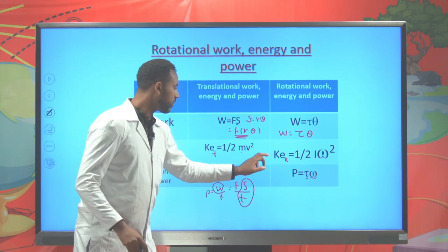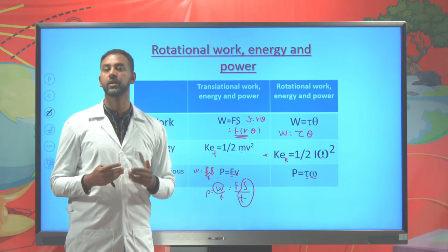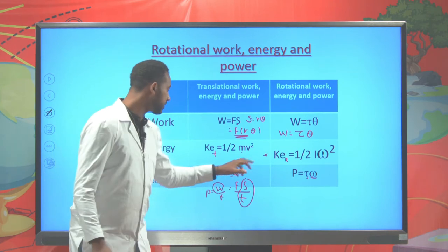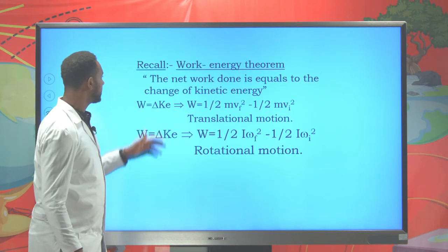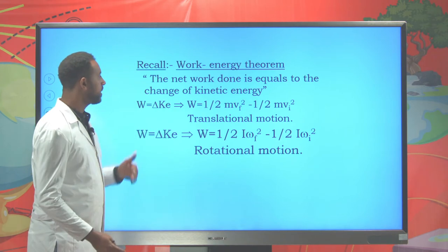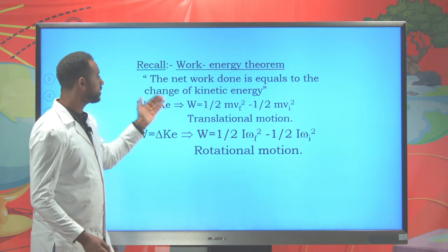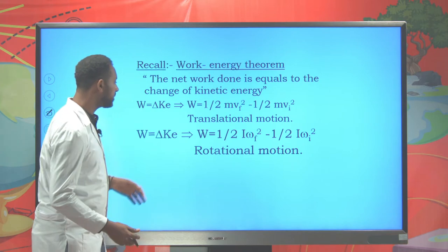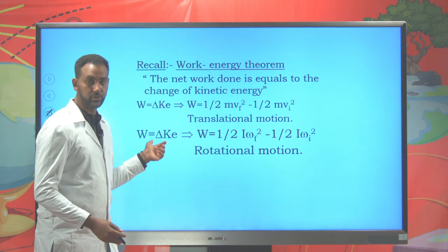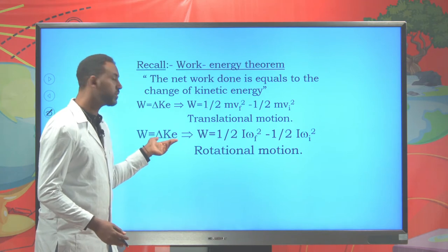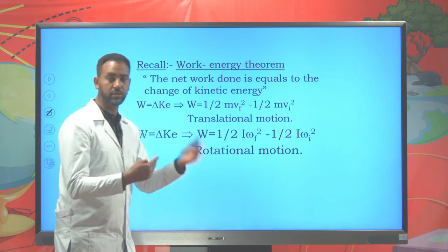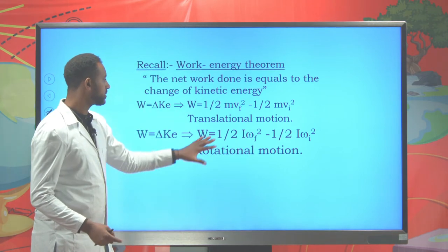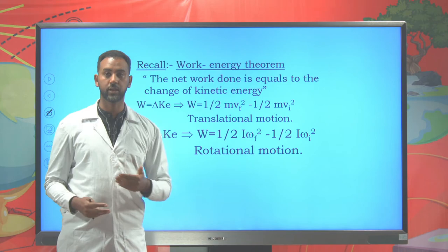We'll focus on the work-energy theorem. In translational motion, the net work equals the change in kinetic energy. For rotating objects, the work-energy theorem still holds: the net work equals the change in rotational kinetic energy, which is one-half I times omega_final squared minus one-half I times omega_initial squared.